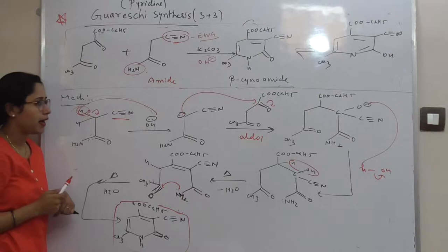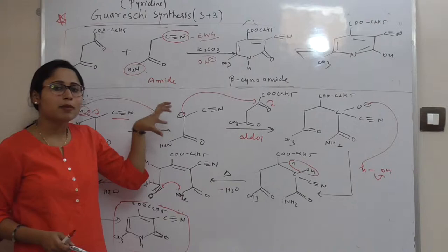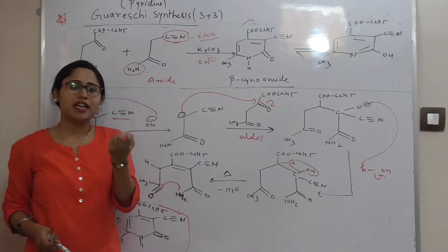Because in the presence of EWG group, once the base abstracts the proton, it converts into carbon ion. This carbon ion directly, once this carbon ion will form.